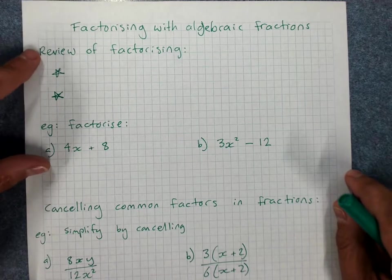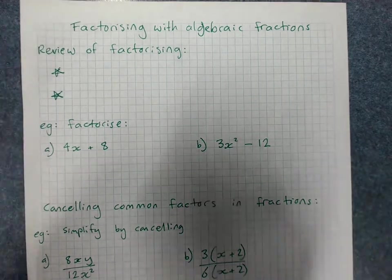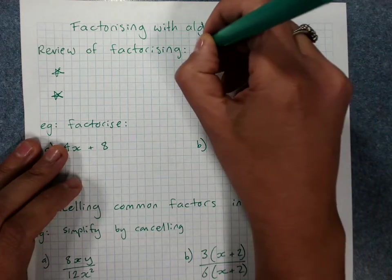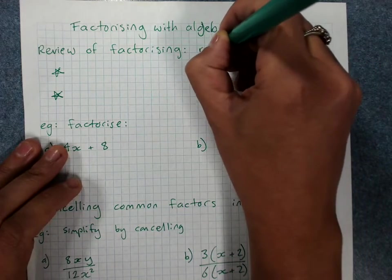And so we'd better just make sure that we remember how to factorise. Factorising means put brackets back in by removing a common factor.